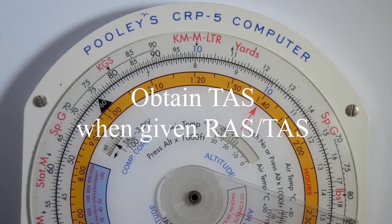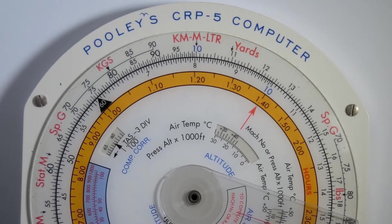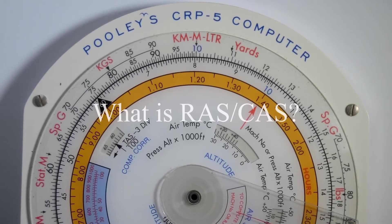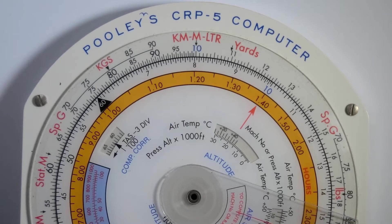In this video, I'm going to show you how to obtain the true airspeed given the rectified or calibrated airspeed. The rectified or calibrated airspeed is simply the indicated airspeed that is corrected for position error and instrument error. So it's a very accurate indicated airspeed.